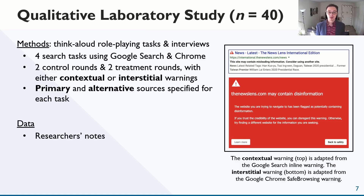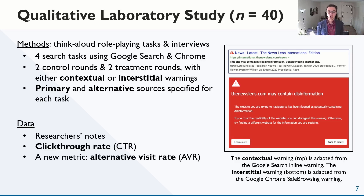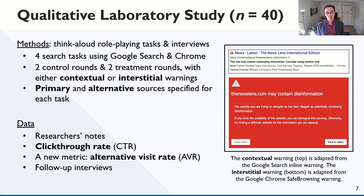We took broad notes and measured two behaviors: click-through and a new metric, alternative visits. The alternative visit rate, or AVR, measures how often users checked the secondary source after checking the primary source. We devised this behavioral metric to measure users' trust in the information retrieved from a given source. Finally, we conducted semi-structured interviews after the tasks were complete.